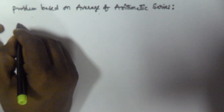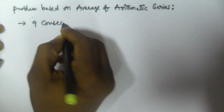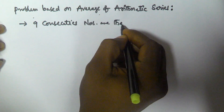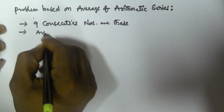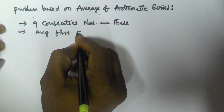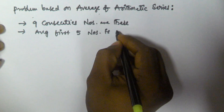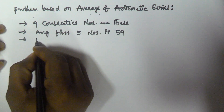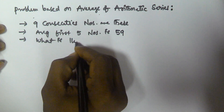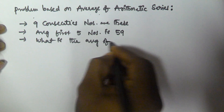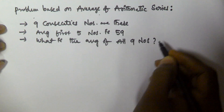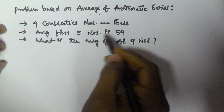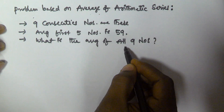Let us assume there are nine consecutive numbers. The average of the first five numbers is 59. Then what is the average of all nine numbers? So the question is: nine consecutive numbers are there, the average of the first five numbers is 59, and we need to find the average of all nine numbers.